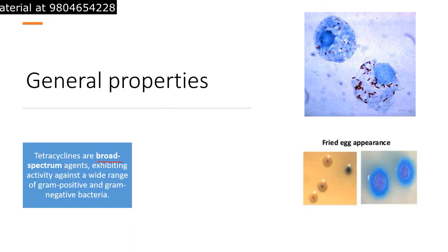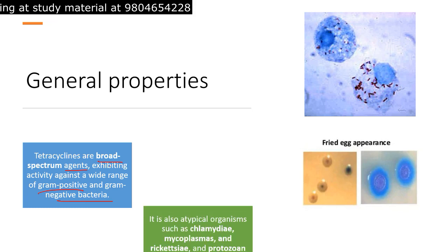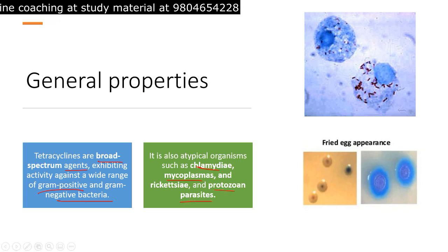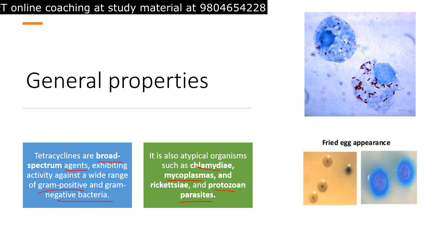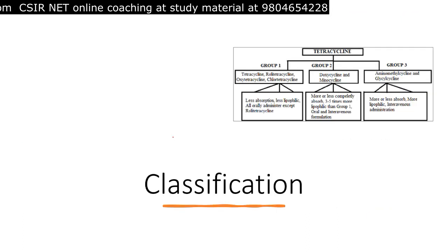Tetracyclines are broad spectrum agents exhibiting activity against a wide range of gram positive as well as gram negative bacteria. They can also act against other agents like Rickettsia, Mycoplasma, and protozoan parasites. That's why tetracycline antibiotics are a really good antibiotic of choice against a broad area of infections, even when you don't have a culture test result available.